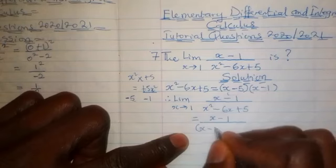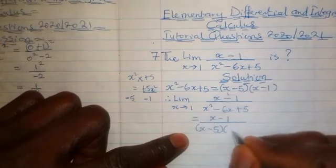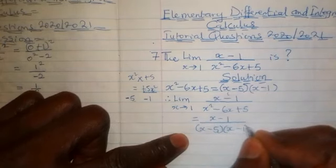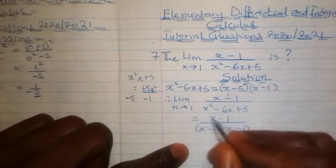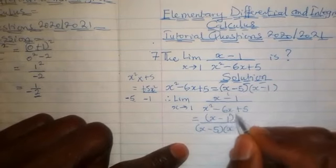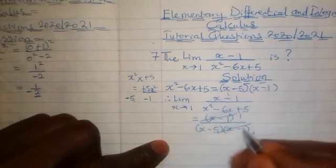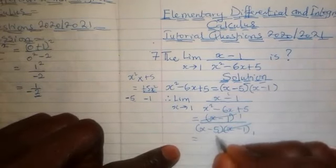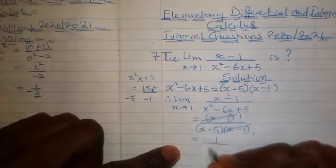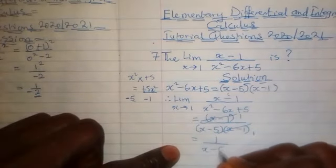So we have (x-5) and (x-1). So you can see that the (x-1) at the numerator will cancel the (x-1) at the denominator. So with this, we can have finally 1 upon (x-5).